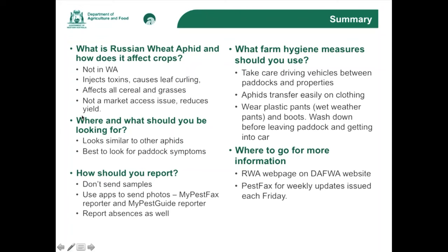G'day everybody. There are a few questions we're going to address today. With the recent introduction of Russian wheat aphid into South Australia and now into Victoria, we're obviously wondering whether we have it here in WA. A couple of reasons why we're treating this very differently: firstly, it has to be managed very differently than the two common cereal aphids we have — the oat and corn aphids. The aphid injects toxins into the plant, which causes more stress. Secondly, it causes leaf curling, and when this leaf curling happens as the leaves are trying to unfold, insecticides are much less effective.